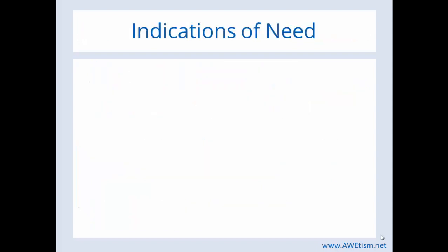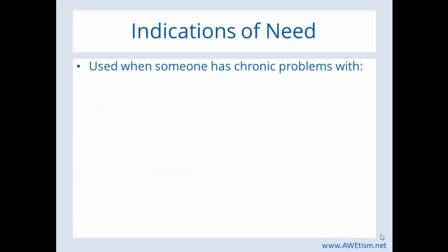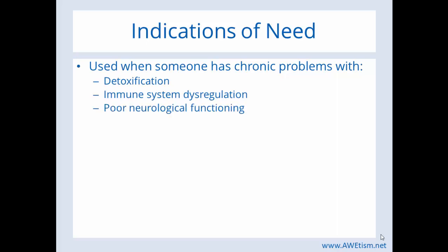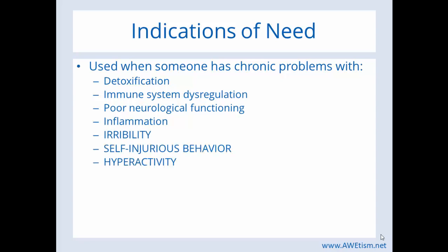Indications of need for N-AC: it's used when someone has chronic problems with detoxification, immune system dysregulation, poor neurological functioning, and inflammation. What you actually see as those four things in your child would be irritability, self-injurious behavior, hyperactivity, and lack of focus.